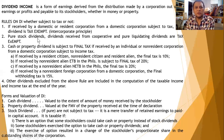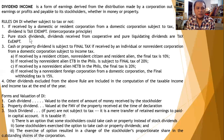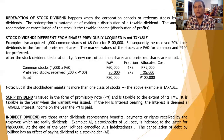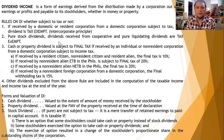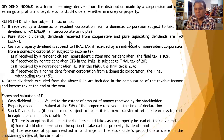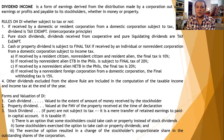Second, pure stock dividends, dividends received from a cooperative, and pure liquidating dividends are tax-exempt. If the company declared a 20% stock dividend, it is tax-exempt. If the declaring corporation is a cooperative, that dividend is tax-exempt. Pure liquidating dividends are also tax-exempt — this is when the corporation is in the process of dissolution, so the dividends being made are called liquidating dividends.